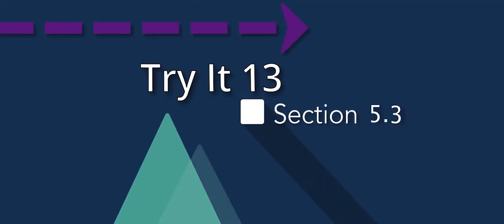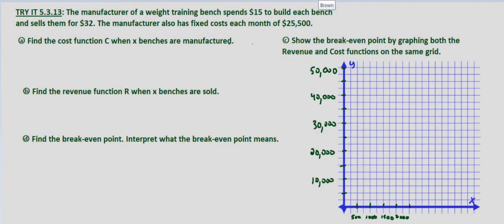In this problem we're told that the manufacturer of a weight training bench spends $15 to build each bench and sells them for $32. The manufacturer also has fixed costs each month of $25,500.